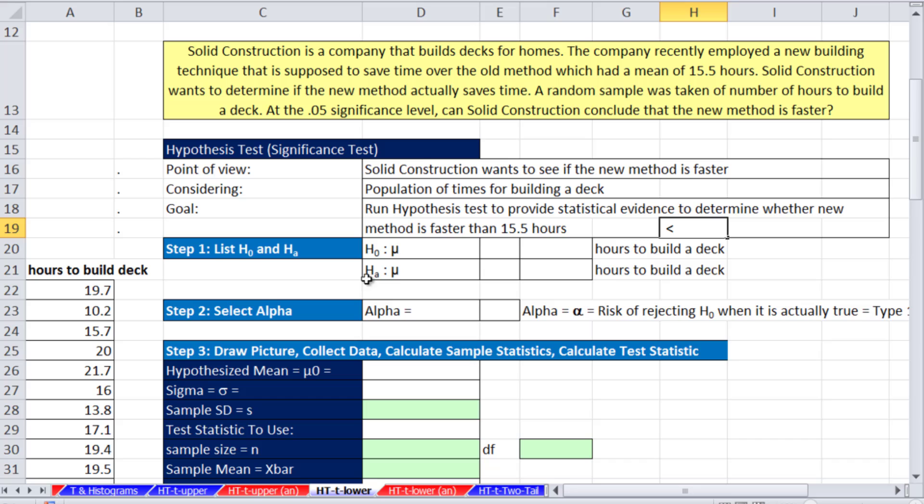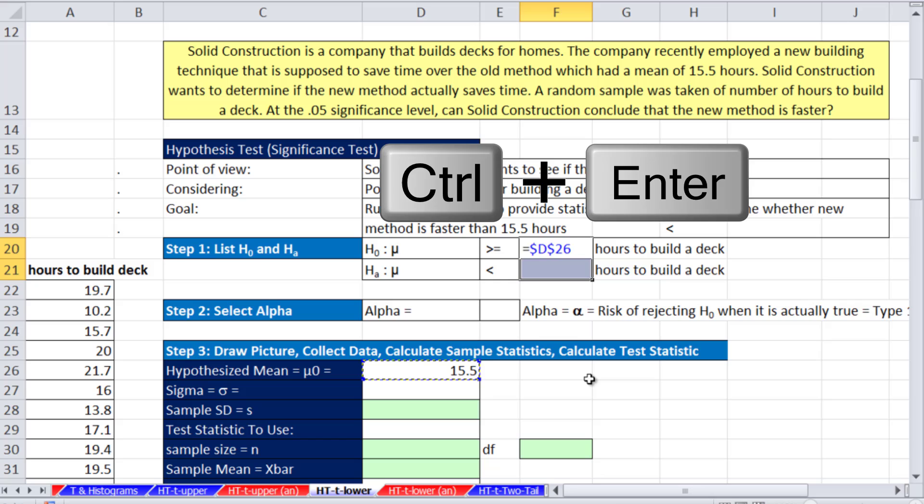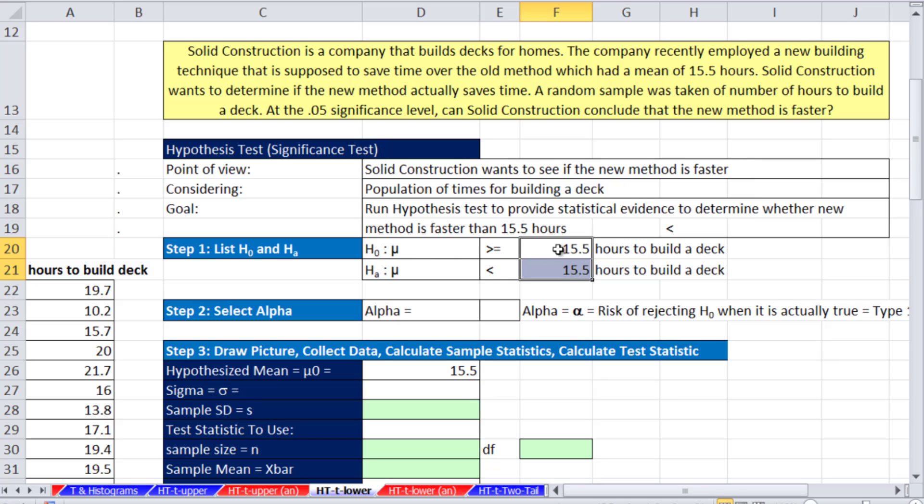We have alternative mu is less than. As soon as we know the comparative operator for the alternative, we jump up to the null hypothesis and we do the opposite and add an equal sign. The old method had a mean time of 15.5 hours. So for both of these, we'll use that 15.5. Null mu is greater than or equal to 15.5. Alternative mu is less than 15.5.